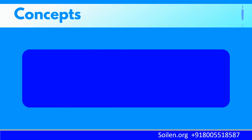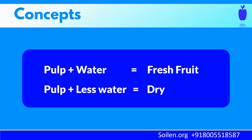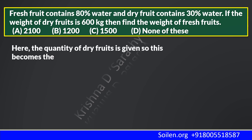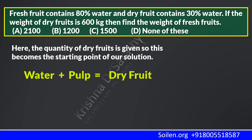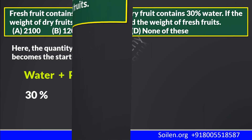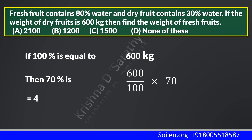The fresh fruit contains pulp plus water, and the dry fruit contains pulp and less water. The quantity of dry fruits is given, so this becomes the starting point of our solution. Water percentage is 30%, so the remaining 70% must be pulp, and 30 plus 70 becomes 100. The quantity of dry fruits is given as 600 kilograms, which is 100%. If 100% equals 600 kilograms, then we can find 70%. So, 70% equals 420 kilograms.